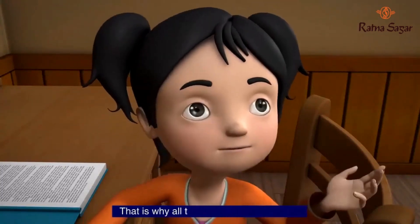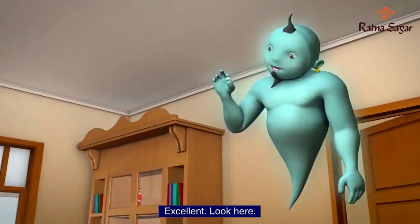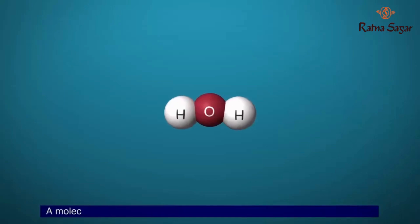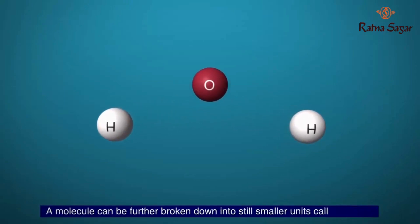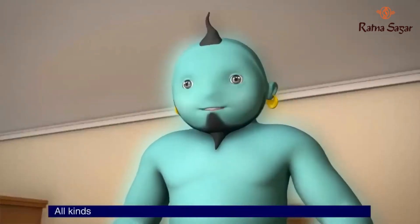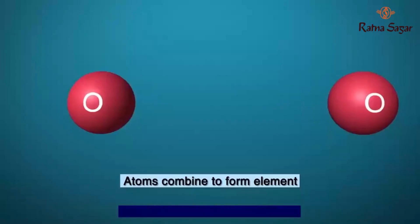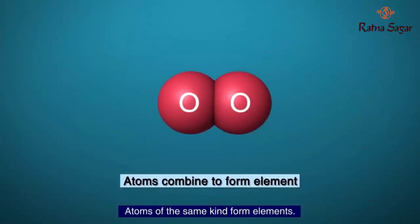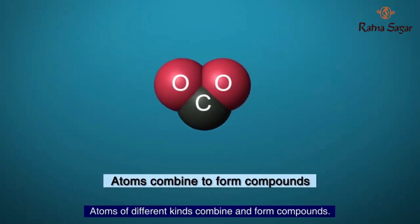That is why all the molecules taste sweet. Excellent. Look here. A molecule can be further broken down into still smaller units called atoms. Atoms are the building blocks of matter. All kinds of matter in the world are made up of about 117 kinds of atoms. Atoms of the same kind form elements. Atoms of different kinds combine and form compounds.